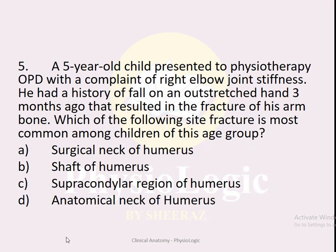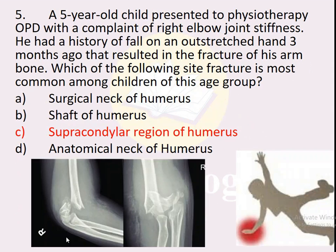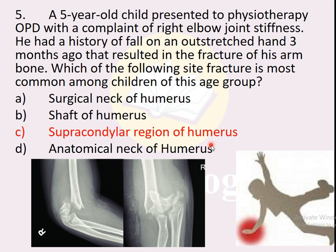MCQ number five: A five-year-old child presented with right elbow stiffness after a fall on an outstretched hand three months ago. Which fracture site is most common in this age group? Options: A — surgical neck of humerus, B — shaft of humerus, C — supracondylar region of humerus, D — anatomical neck of humerus. The correct option is C — in children, the supracondylar region is the most common fracture site after a fall on an outstretched hand.